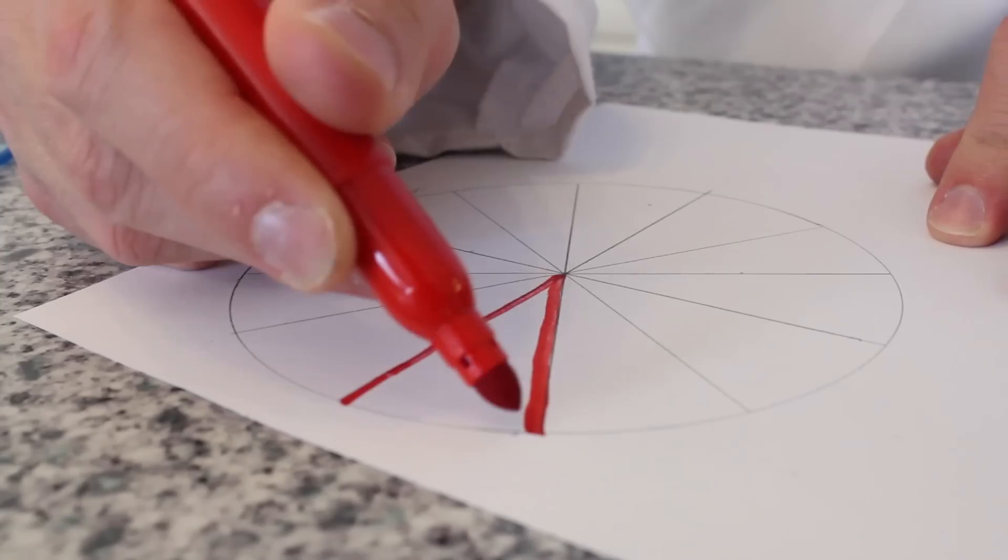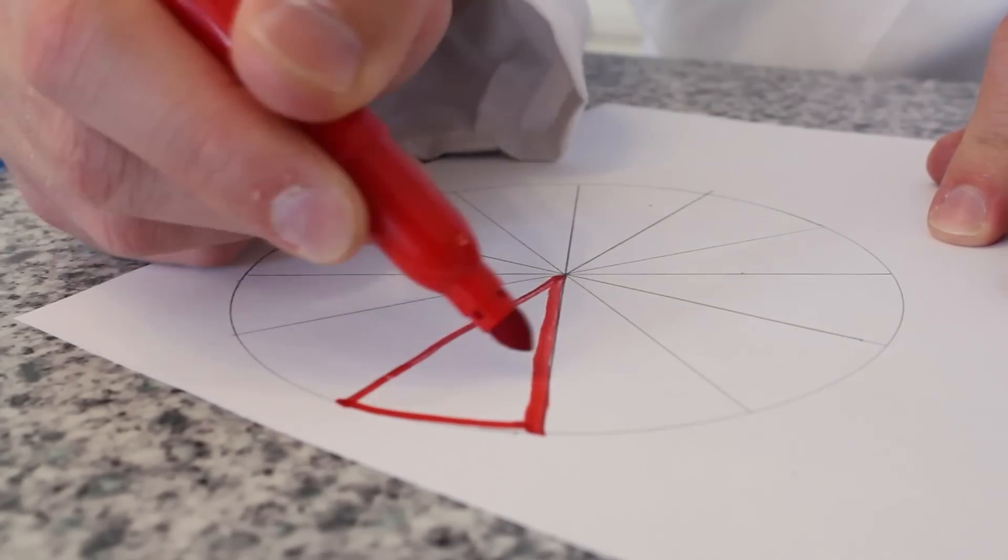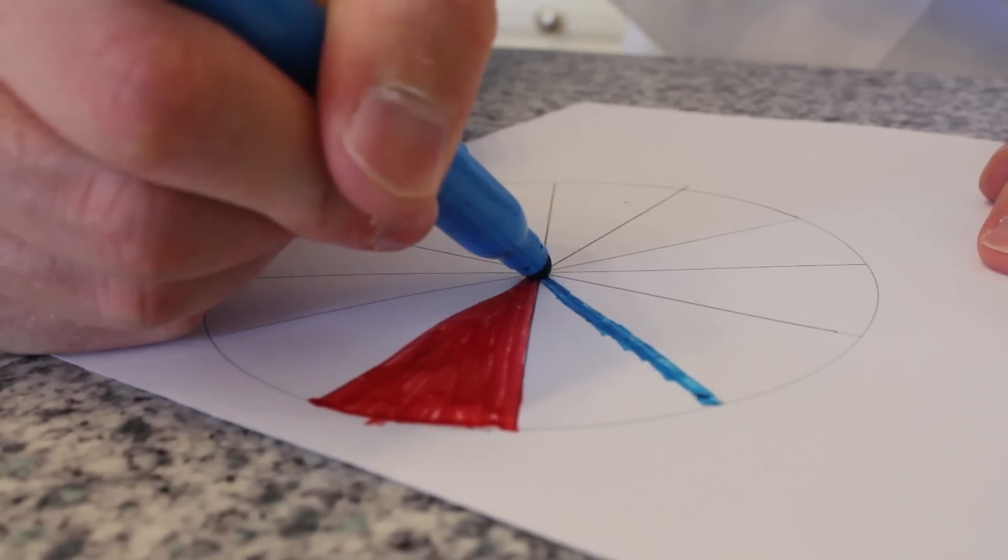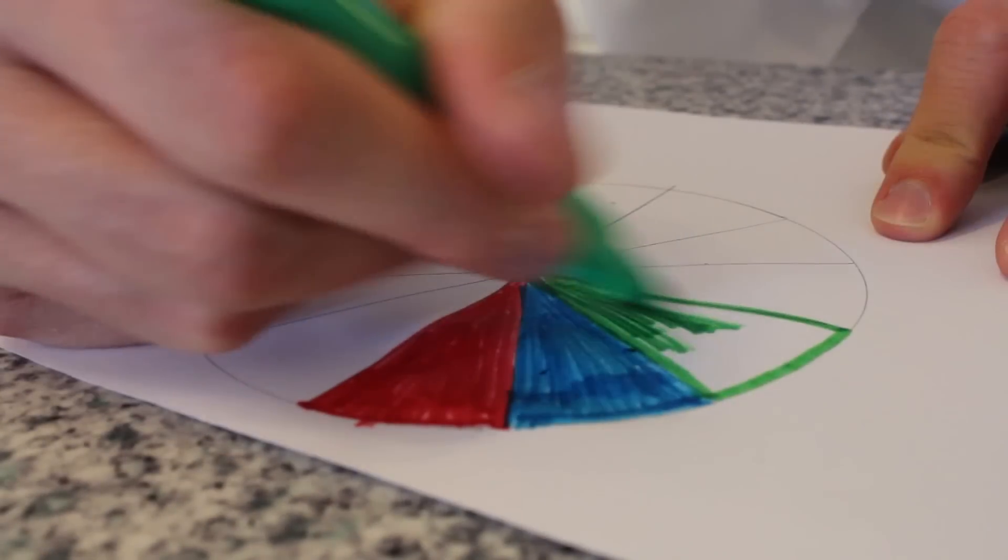Now, take your red, blue, and green felt pens and use them to fill in the sections of your disc. You're going to want to alternate between red, blue, and green, all the way around until all sections of your disc have been filled in with color.